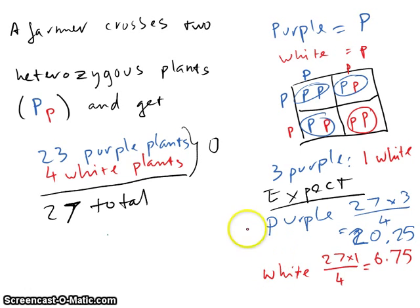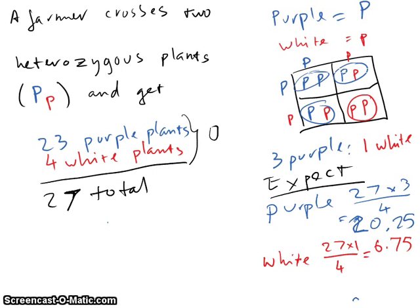So this is my expected value for the purple and the white, what if I was to have a Mendelian separation.